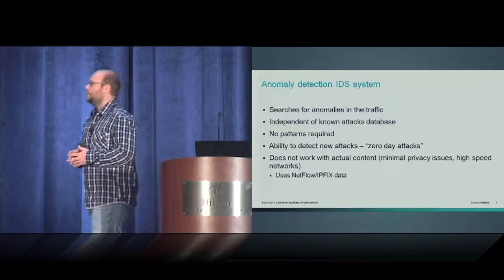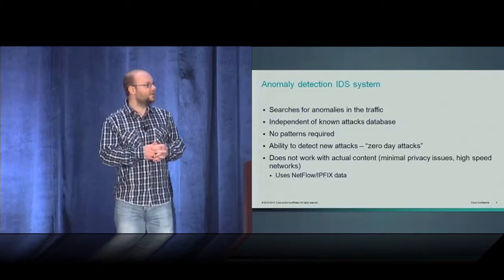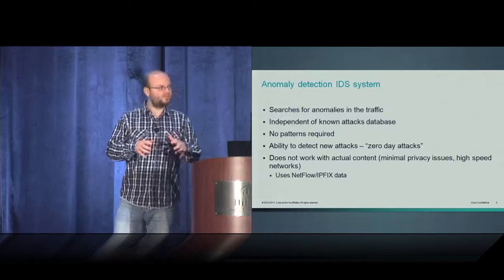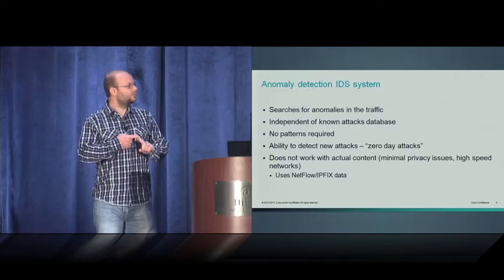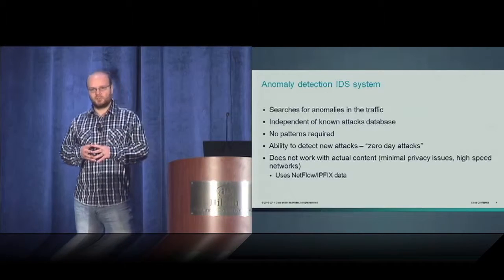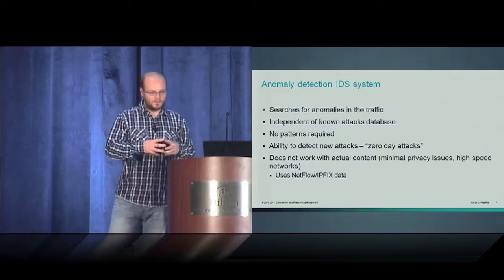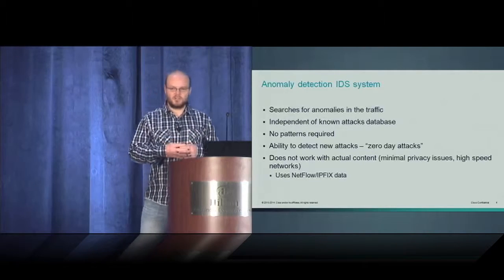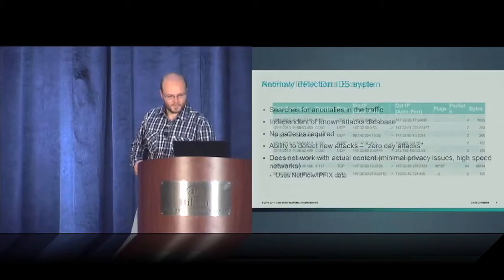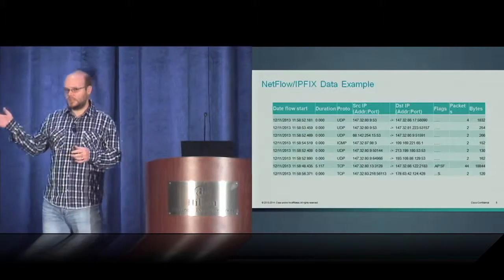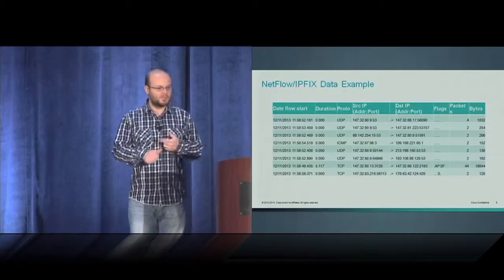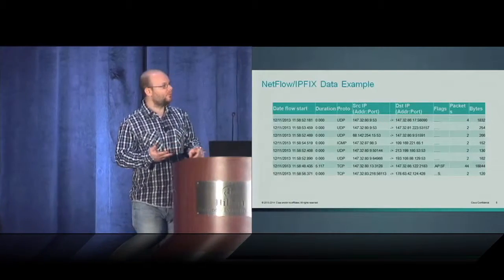Things that I do like are anomaly detection systems that work with NetFlow data. Just to get on the same page, they search for anomalies in the traffic. They are independent of known attack databases so no patterns required, and they're able to detect zero day attacks. They don't work with actual content so there are minimal privacy issues and they can be easily deployed on high speed networks. By NetFlow IP fixed data I mean this: basically the NetFlow contains starting time, duration, protocol, source IP, source port, destination IP, destination port, flags, number of bytes, number of packets.